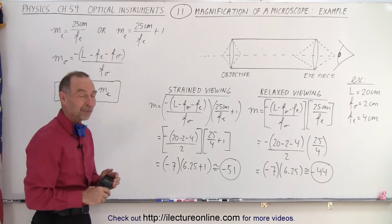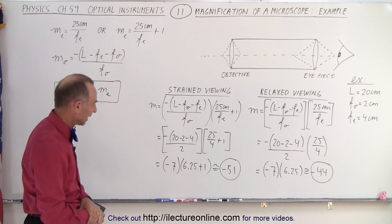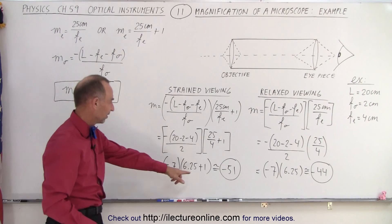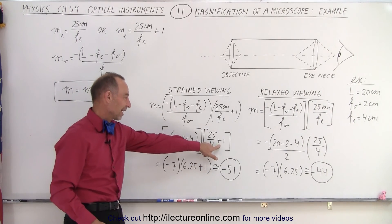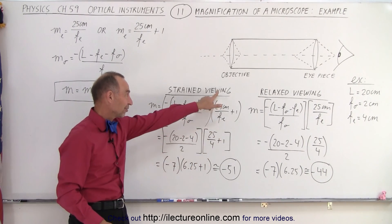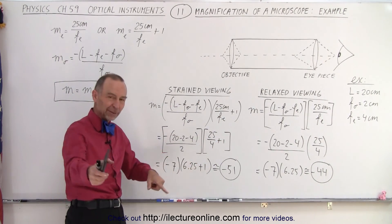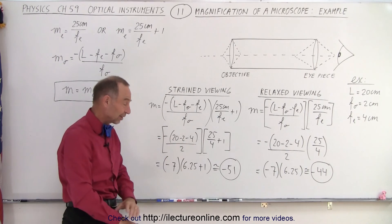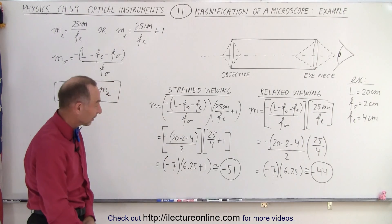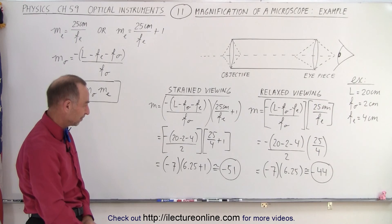Is it always a plus 1 at the end? Yes. For the magnifying glass with strained viewing it's always plus 1 — that's why we did that video showing the general equation. It always works out to be plus 1.